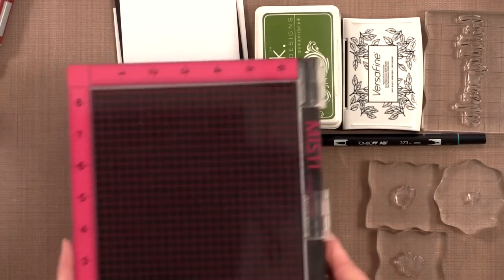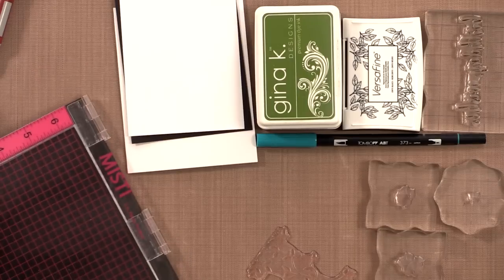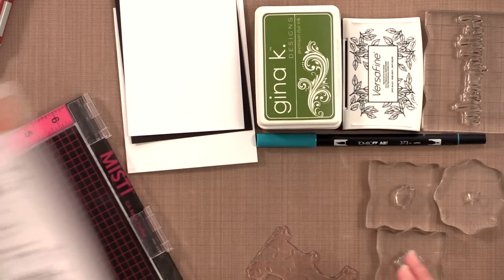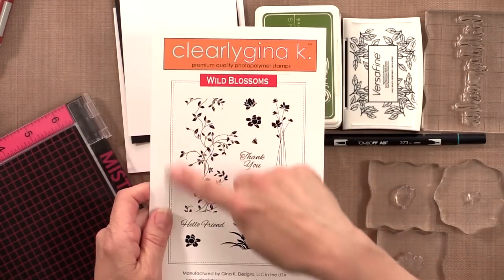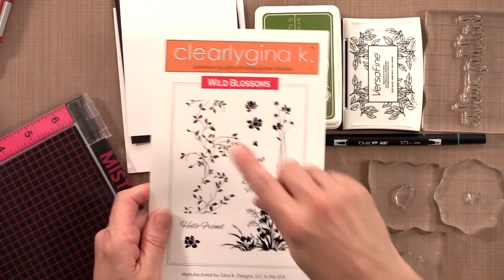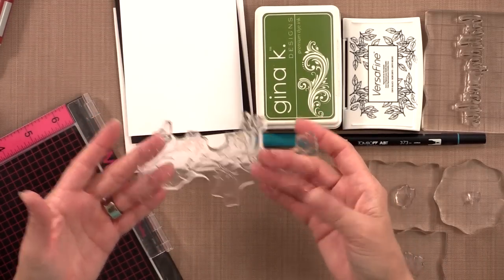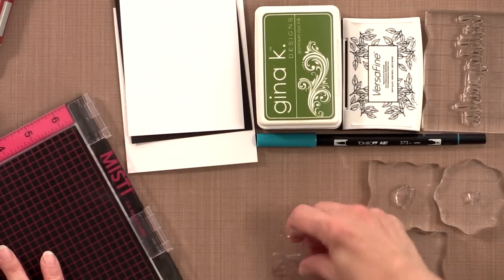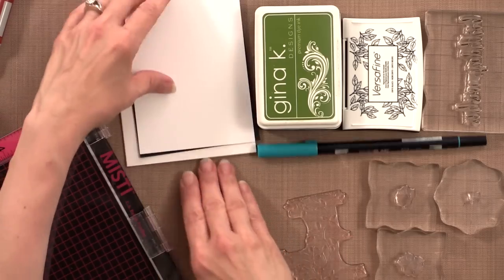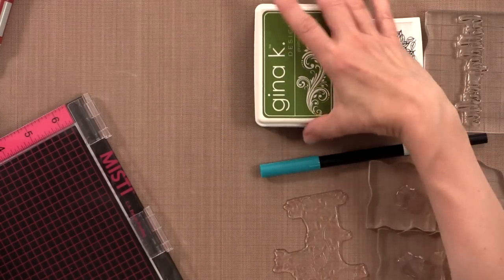I'm also going to use my MISTI stamping tool because one of the images that I'm going to use from the Wild Blossoms set is this huge background image and you can see how big this stamp is. It's just enormous. So by using the MISTI I'm guaranteed to get a great impression and I can position it exactly where I want.